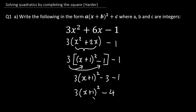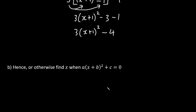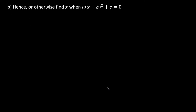On to part B: hence or otherwise, find x when a(x + b)² + c = 0. This is essentially asking us to solve the quadratic expression when it equals zero. So let's write out our expression: 3(x + 1)² − 4 = 0.